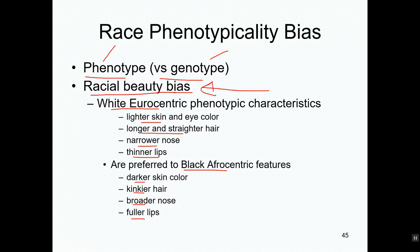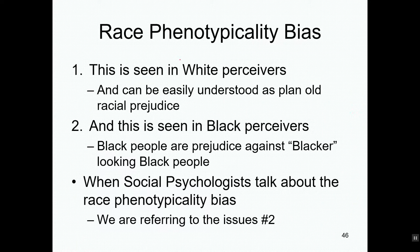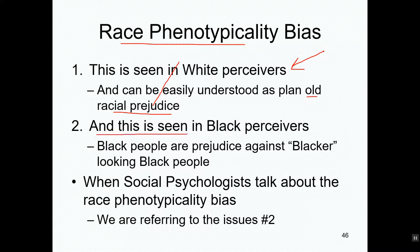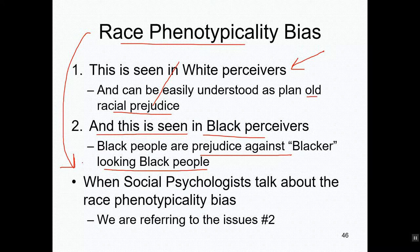When we say phenotypicality bias, it's a racial beauty bias where people prefer white Eurocentric characteristics to black Afrocentric characteristics. This is seen in white perceivers — they prefer lighter-skinned black people to darker-skinned black people, which is plain old racial prejudice. But when we talk about the racial phenotypicality bias, we focus on black people as perceivers being prejudiced against more Afrocentric-looking black people, preferring lighter-skinned and less phenotypically Afrocentric-looking individuals.